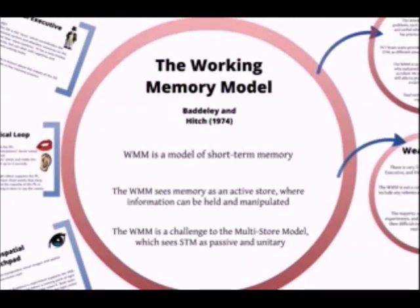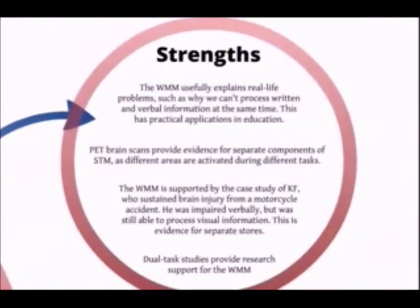Now let's look at some general strengths and weaknesses of the working memory model. For strengths, it is useful because it helps explain real-world processes and problems, such as why we cannot process written and verbal information at the same time. This has practical applications in education. Also, PET scans provide evidence for the separate components in short-term memory, because different areas of the brain are activated during different tasks.